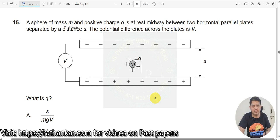Question number 15: A sphere of mass M and positive charge Q is at rest midway between two horizontal plates separated by distance S. The potential difference across the plates is V.